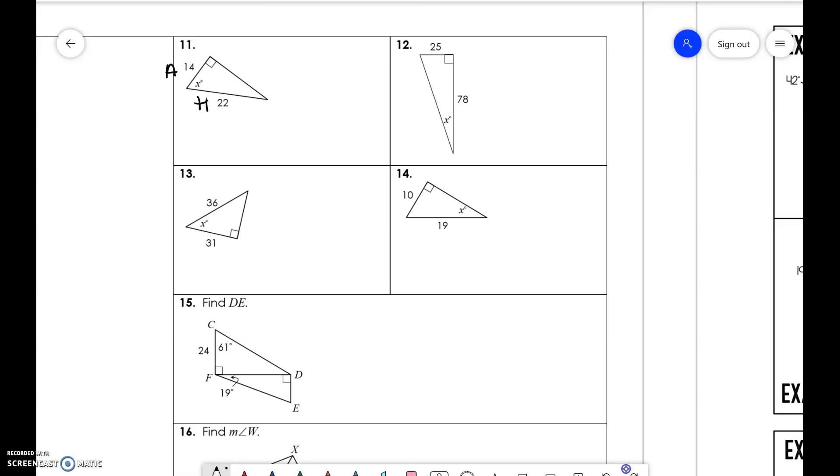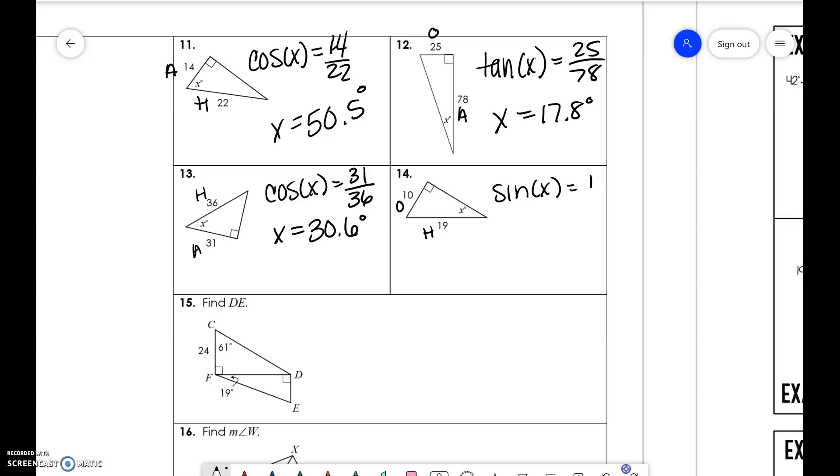We have adjacent and hypotenuse. So cosine of x is equal to 14 over 22. And I'm just going to write the answer 50.5. So we know how to go through these. It's just doing cosine inverse. Opposite, adjacent. So tangent of x is 25 over 78. X is 17.8 degrees. Adjacent hypotenuse. So cosine of x is equal to 31 over 36. X is equal to 30.6 degrees. And then we have opposite hypotenuse. So sine of x is equal to 10 over 19. X is equal to 31.8 degrees.